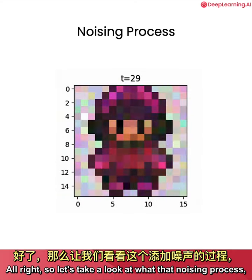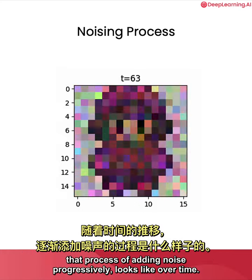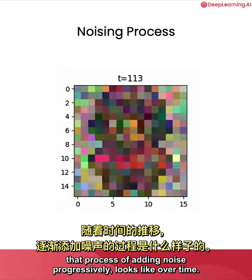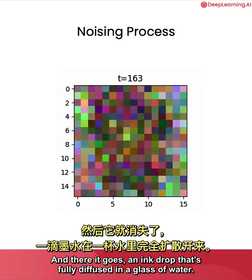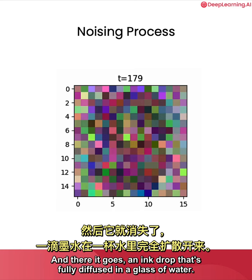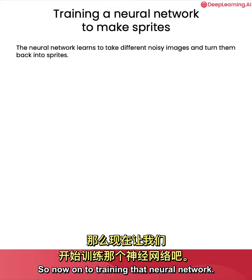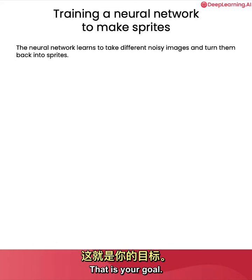So let's take a look at what that noising process — that process of adding noise progressively — looks like over time. And there it goes, an ink drop that's fully diffused in a glass of water. So now on to training that neural network, so it learns to take different noisy images and turn them back into sprites. That is your goal.